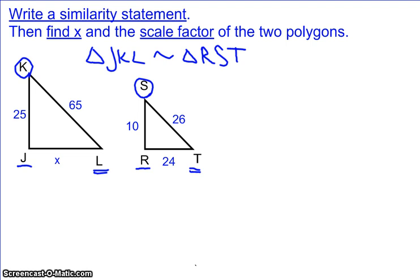So all a similarity statement does is match up the letters. J goes with R, K goes with S, L goes with T. So that helps you figure out which side lengths belong with each other. So we are already done with the first part of this problem. That is the similarity statement.